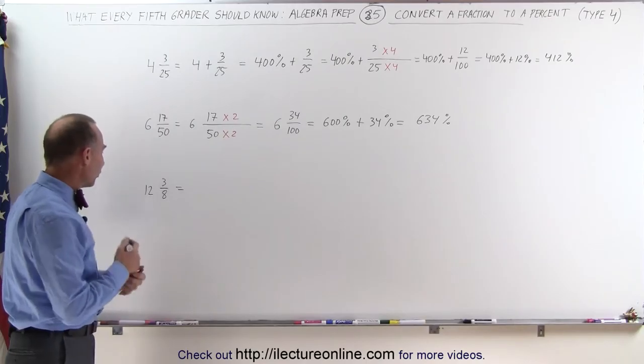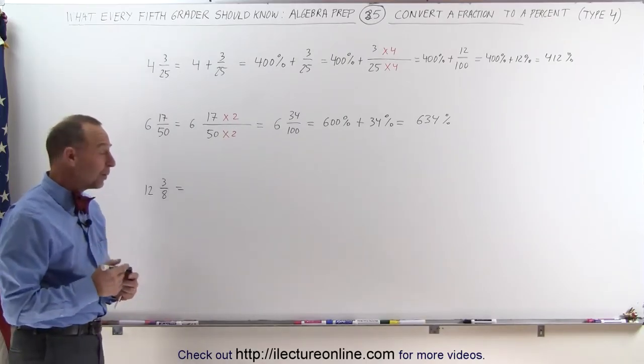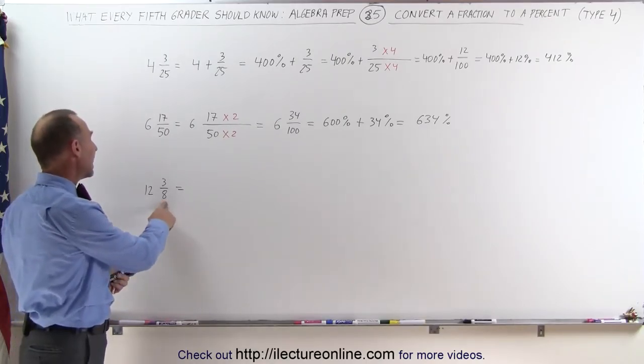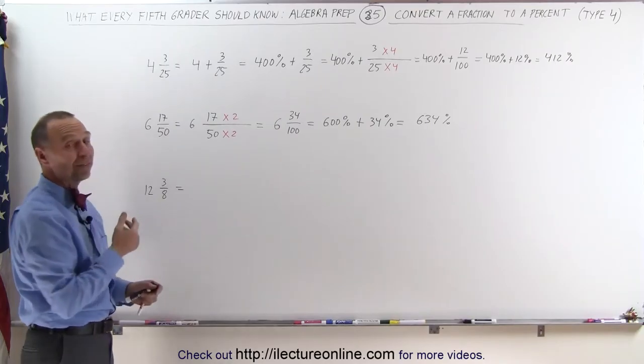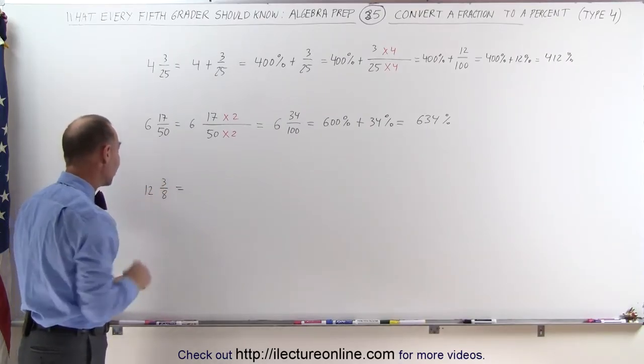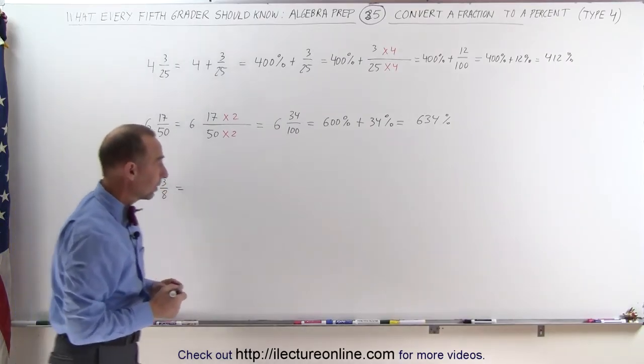And now for a third mixed number, 12 and 3/8. Notice I cannot turn the 8 into 100, which means I have to do a longhand division for that part of the fraction. Let's go over here.